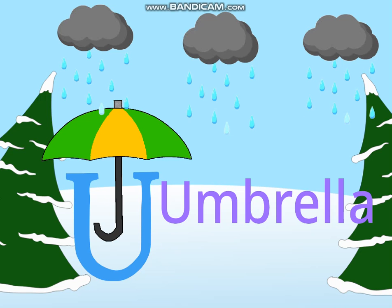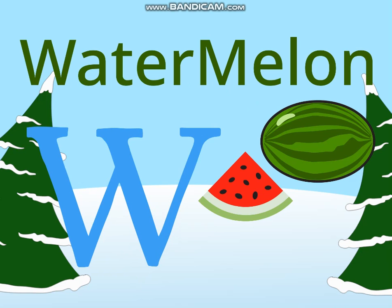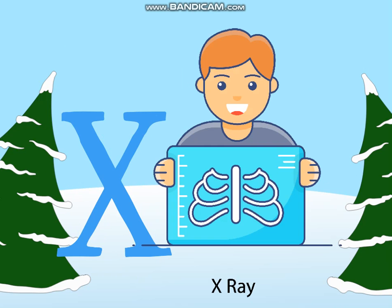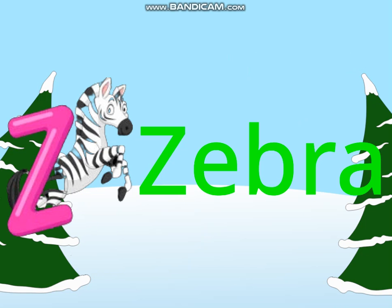U for umbrella. V for van. W for watermelon.